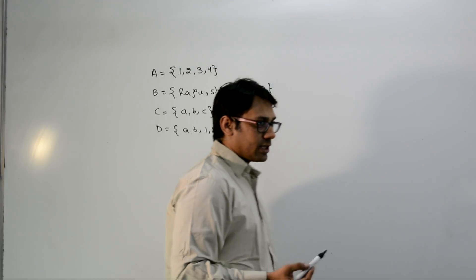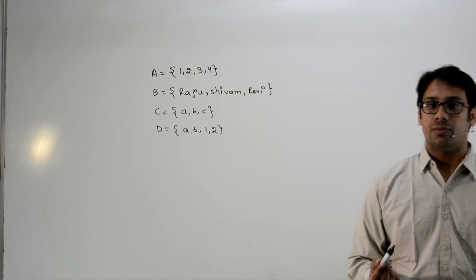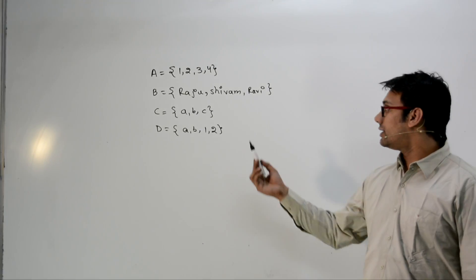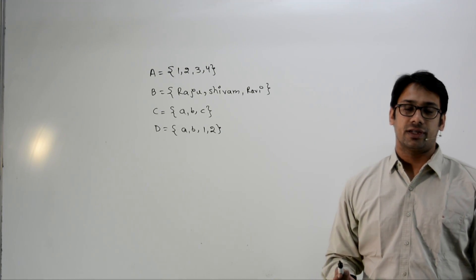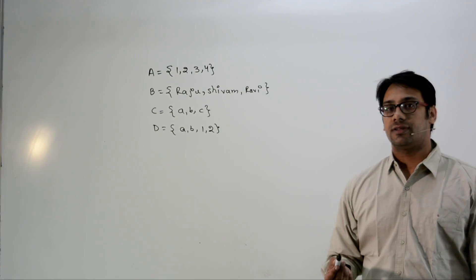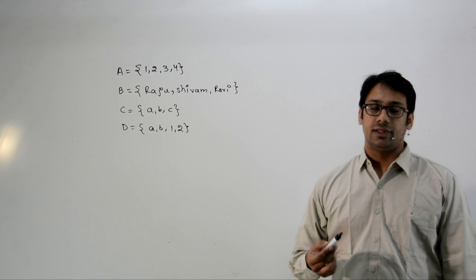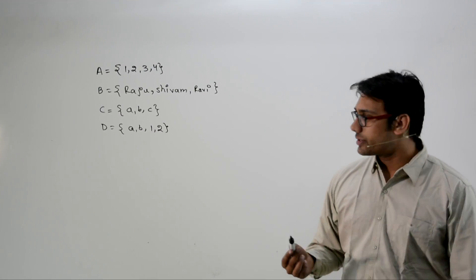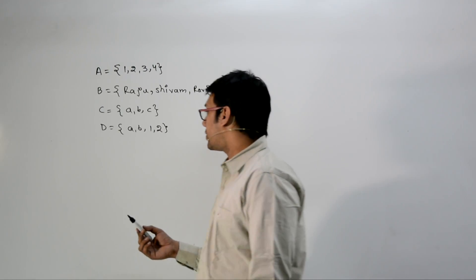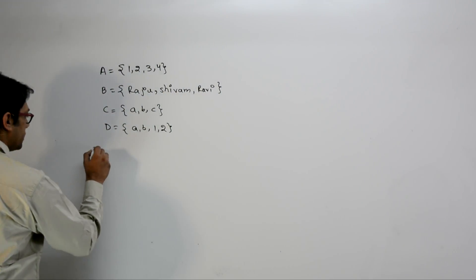These four sets are well-defined collections of objects. A well-defined collection does not necessarily mean the objects are ordered — they can be unordered. The next definition is a null set.